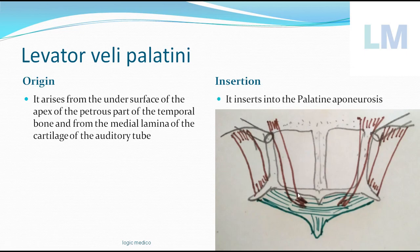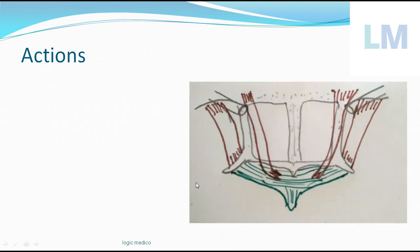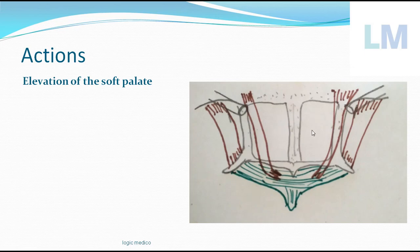The insertion is the upper surface of the palatine aponeurosis. When this muscle contracts, the soft palate gets elevated — 'levator' is the Latin word for elevation. When the soft palate is elevated, the nasopharynx above is separated from the oropharynx below, preventing food from the oral cavity or oropharynx from entering the nasopharynx.